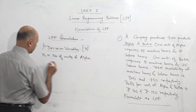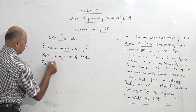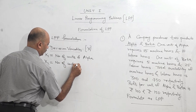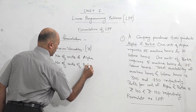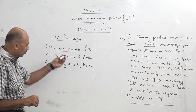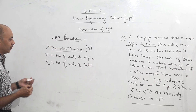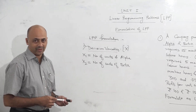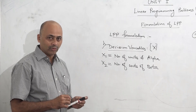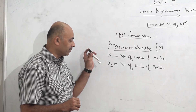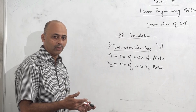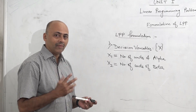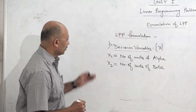x2 is equal to number of units of beta. They are called x because at the start of the solution we do not know the values of x1 and x2 — we do not know how many units of alpha and beta we are going to manufacture. That is why decision variables are represented by x, which stands for unknown value or unknown quantity. When we solve the problem we get the values of x1 and x2. This is step number one.